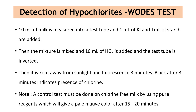Last but not least, let's see how to detect hyperchlorides. For that, 10 ml of milk is measured into a test tube and 1 ml of potassium iodide and 1 ml of starch are added. Then the mixture is mixed and 10 ml of HCl is added and the test tube is inverted. Then it is kept away from sunlight for 3 minutes. Black color after 3 minutes indicates presence of chlorine. A control test must be done on chlorine-free milk using PO reagents, which will give a pale mauve color after 15 to 20 minutes.